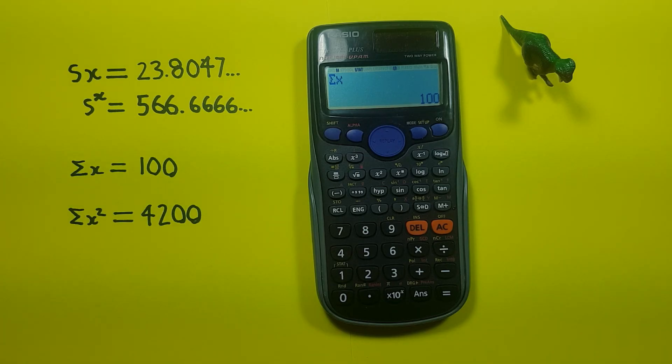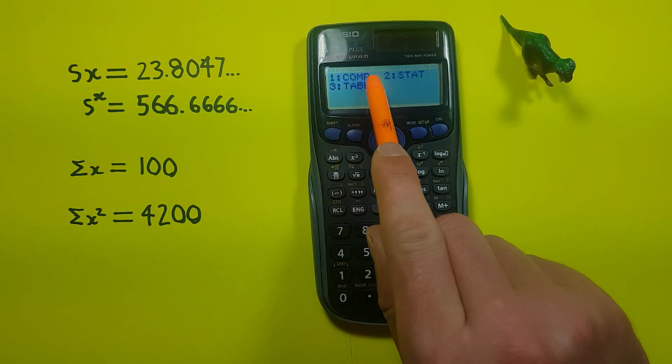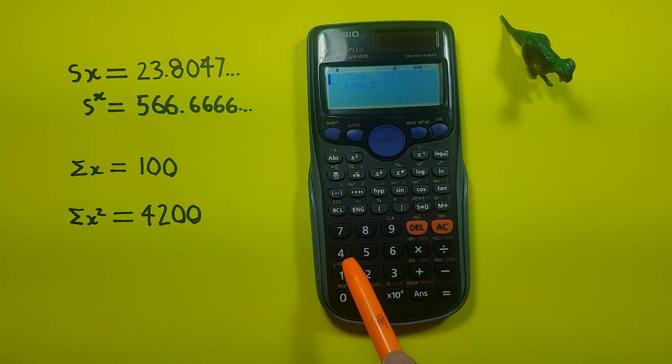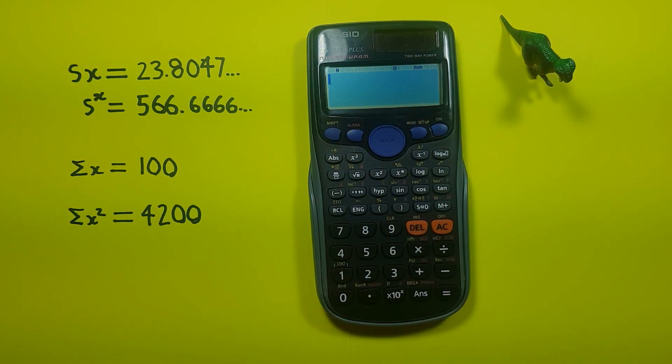All right, once you're done with this, you can go back to mode, and if you want to go back into normal mode, press comp. You'll see the word stat has disappeared from the top of our screen and we're back to normal mode here. All right, I hope this helps and good luck on those tests out there, everybody.